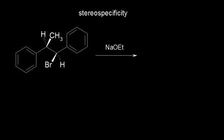In this video, we'll take a look at the stereospecificity of the E2 elimination reaction. First, identify your alpha carbon — that's the one with your halogen attached to it. So here is our alpha carbon. Our beta carbon is this one right here, and there's a beta proton on it. This is our beta proton. This time, there's only one proton at the beta position.